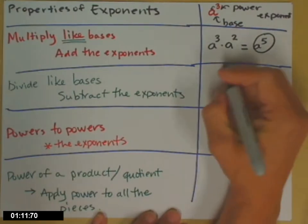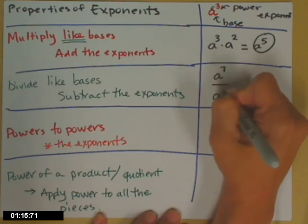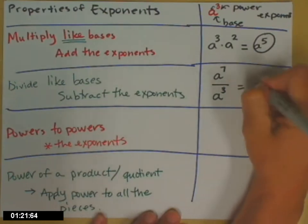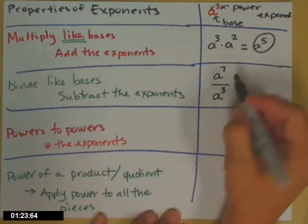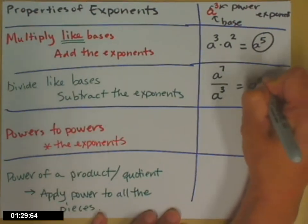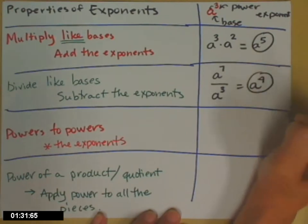If you divide like bases, a to the 7th divided by a cubed, you subtract the exponents. Again, a and a, they're like bases, so subtracting the exponents. A to the 7th minus 3. A to the 4th.